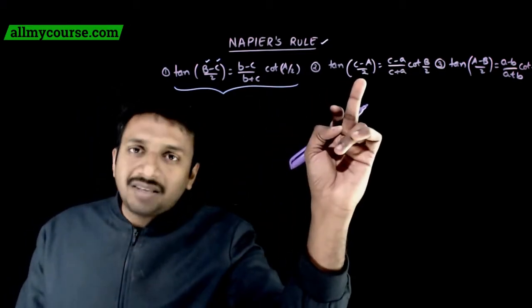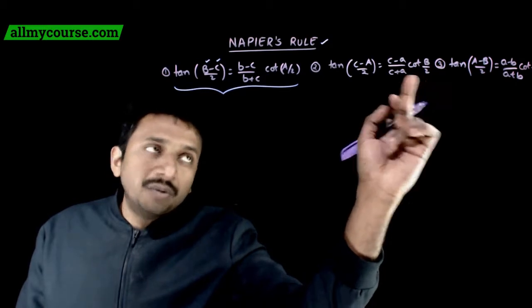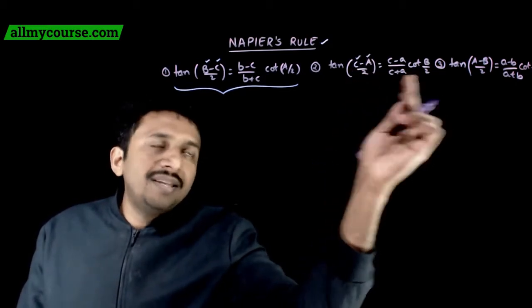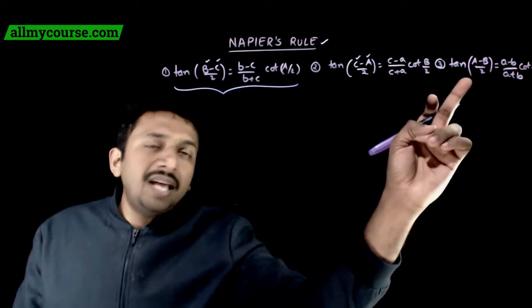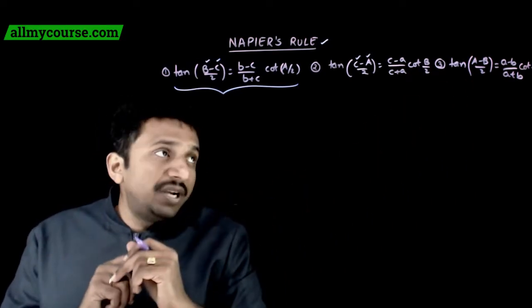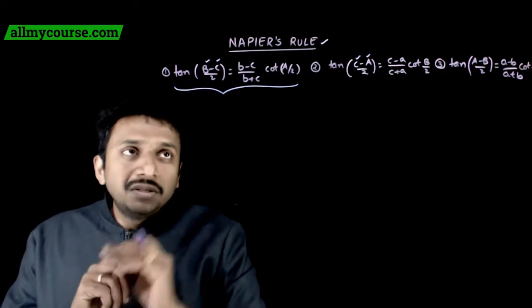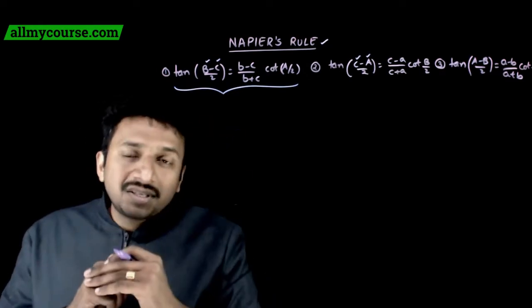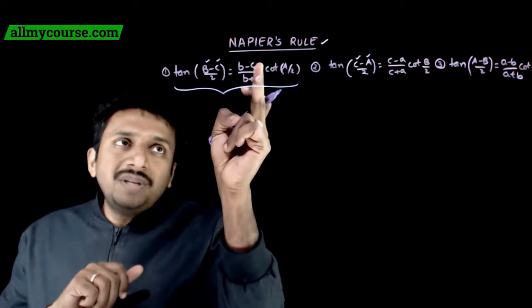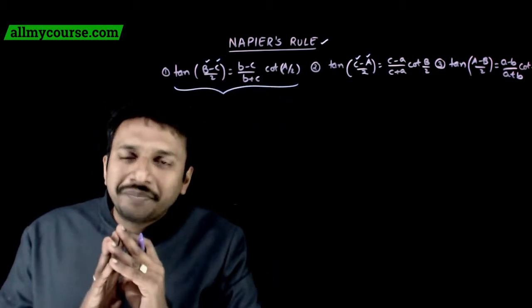We have (C minus A) by 2, equal to (c minus a) by (c plus a) into cot(B/2). The other angle form: tan(A minus B) by 2 is equal to (a minus b) by (a plus b) times cot(C/2). You can also write tan of (C minus B) by 2 equals (c minus b) by (c plus b) times cot(A/2), and so on.